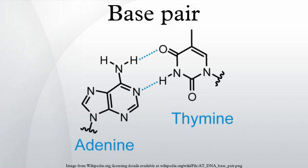In 2002, Ichiro Hirao's group in Japan developed a non-natural base pair between 2-amino-8-(2-thienyl)purine and pyridine-2-one that functions in transcription and translation for the site-specific incorporation of non-standard amino acids into proteins. In 2006, they created 7-(2-thienyl)imidazo[4,5-b]pyridine and pyrrole-2-carbaldehyde as a third base pair for replication and transcription. Afterward, Ds–Px was discovered as a high-fidelity pair in PCR amplification.